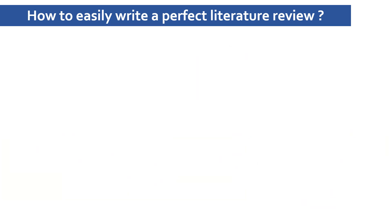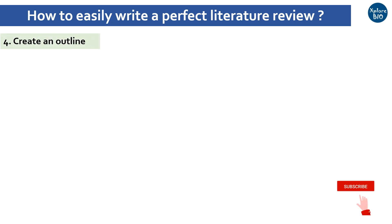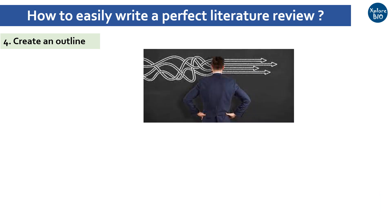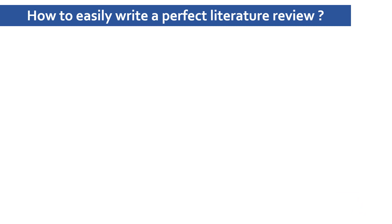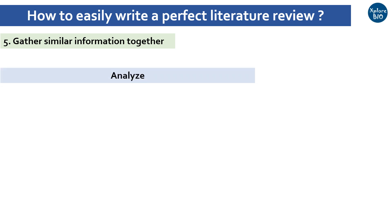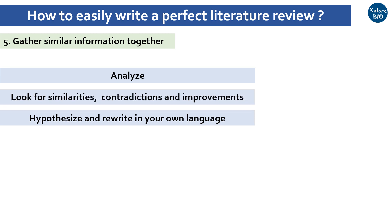The next important step is creating an outline of the literature review. This will help you structure your thoughts and begin writing, ensuring that you cover all the important points. You can make headings and subheadings for easy follow-up. With the literature you have, collect similar information together, analyze it to draw conclusions, and synthesize a write-up in your own language. Look for similarities, contradictions, and improvements in the methods while you read.